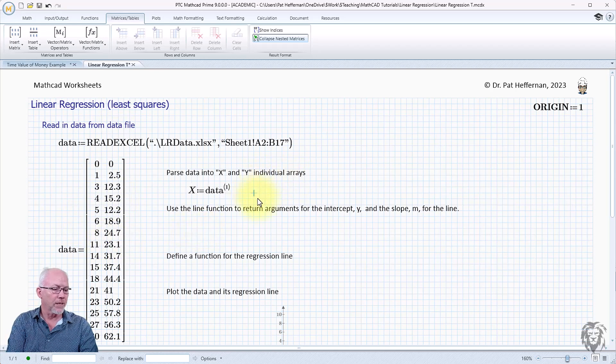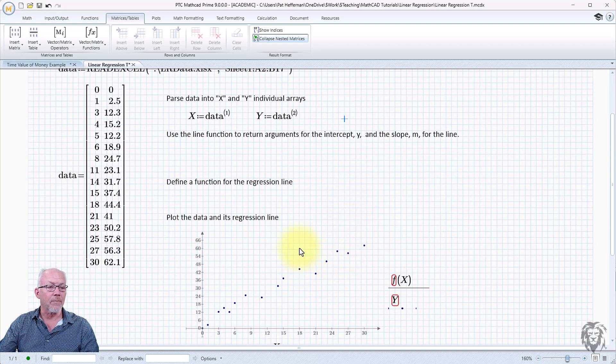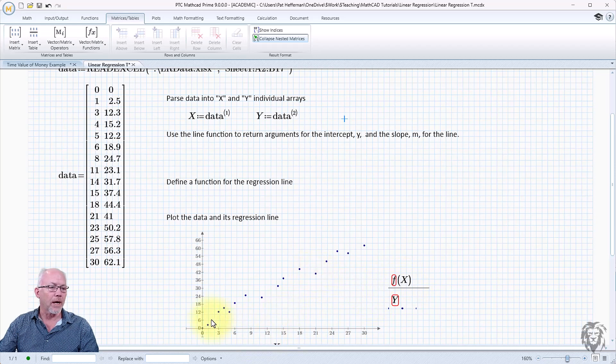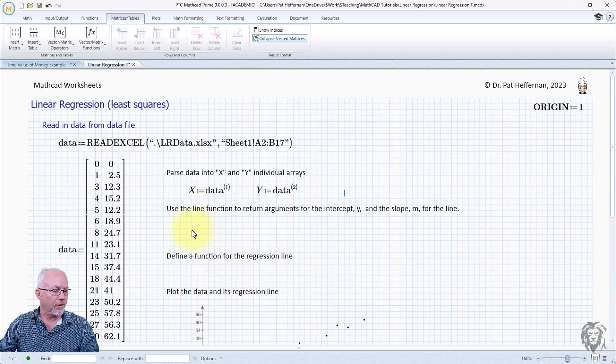Then I'm going to assign my y coordinates again to data, come up, pick up our column operation, and in this case it's going to be column two. So now we have two arrays. Because I've already set up my plot to plot x versus y, you see the data is now plotted down here.